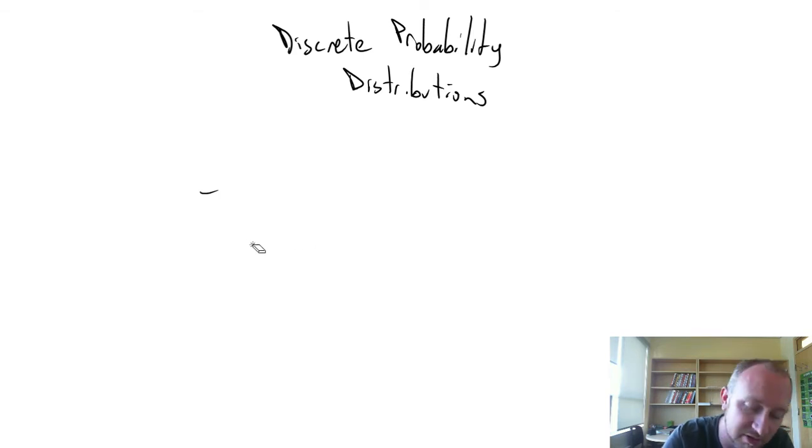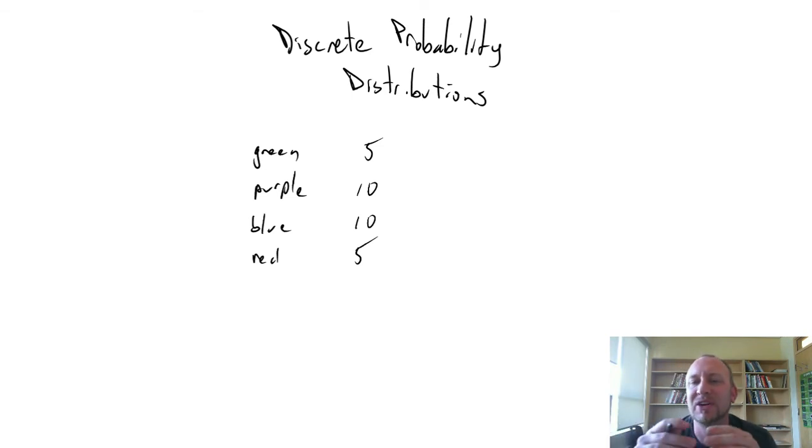To deal with discrete variables, we're going to look at a handful of specific probability distributions. What is a probability distribution? It's effectively a distribution of probabilities that a variable can take for different values. As a simple example, let's look at the different color cars in the parking lot. I have green, purple, blue, and red cars. Maybe there's five cars, ten cars, ten cars, and another five cars. Here we've got a distribution of these different colors of cars.